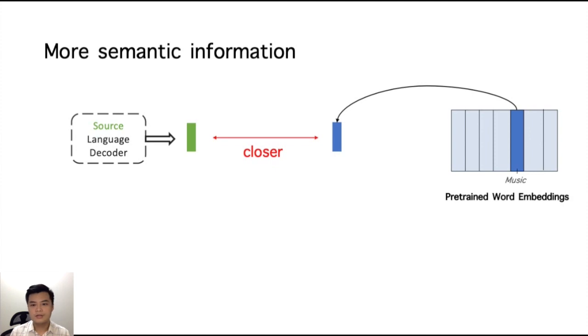Our idea is to make the hidden state closer to the ground truth pre-trained word embedding. Because word embeddings have shown some good features, such as context information, semantic, or syntactic relations in recent NLP research, we use it as a training target.